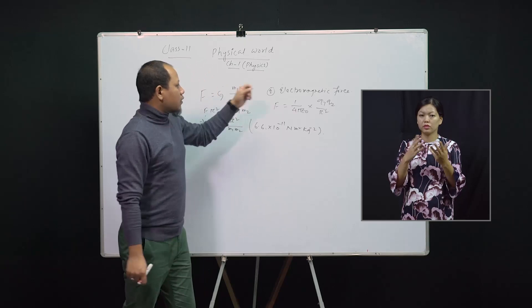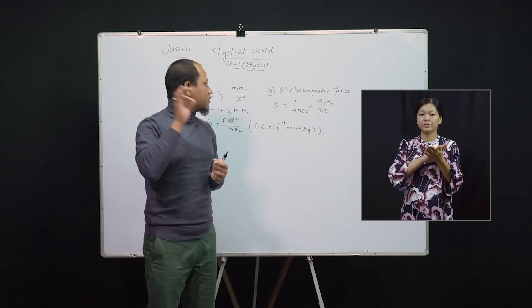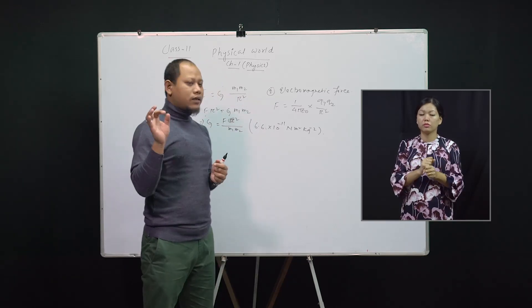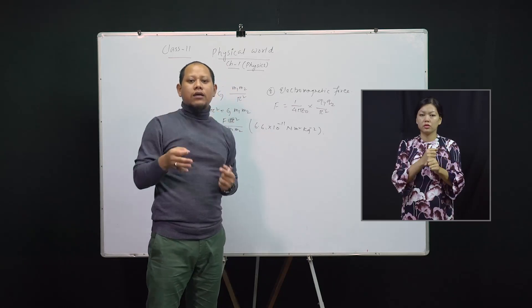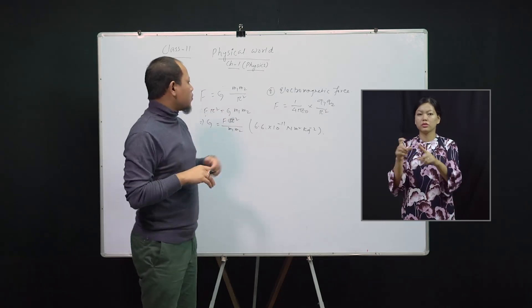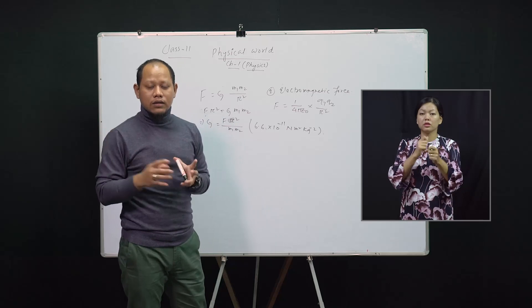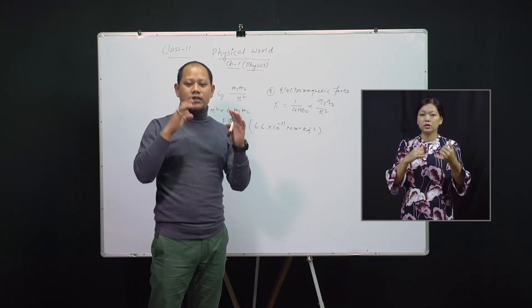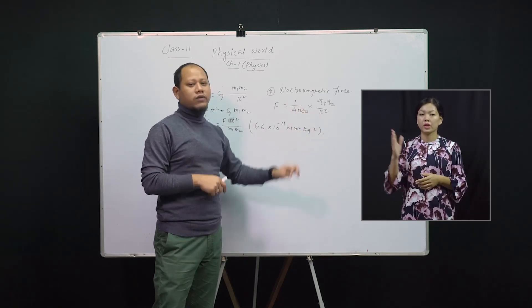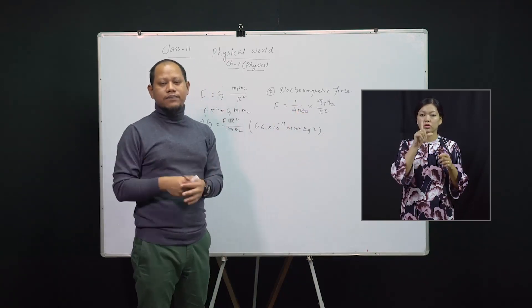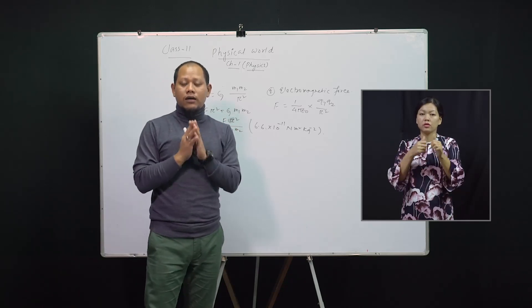The electric force is generated by a charged particle at rest. When a charged body starts moving, it produces a magnetic field, and that magnetic field acts as a force on moving charges. So electromagnetic force is a combination of electric as well as magnetic fields. Since it deals with charged particles, it may be repulsive as well as attractive. When the charges are like, we get repulsive force; when the charges are unlike — positive and negative — we get attractive force. This also obeys the inverse square law.